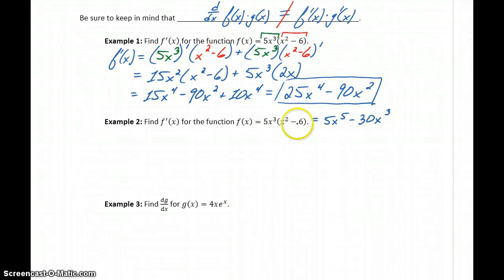So what we've done is rewritten the function. Now we just have the difference of two power functions, which means since these are being added or subtracted from each other, now we can just differentiate term by term. So the derivative will be 25x to the fourth minus 90x squared.